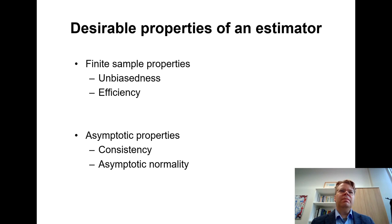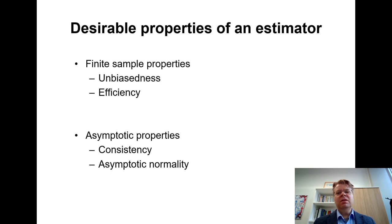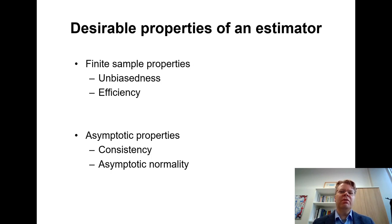There are some properties indicated on this slide, and we can classify them into so-called finite sample properties and asymptotic properties. Finite sample properties are applicable to any sample size — you could have 10, 100, or a million observations and these properties still hold. Asymptotic properties concern what happens if you have an arbitrarily large sample size — what if you have all the data you could possibly have, so that sample size is not really an issue.